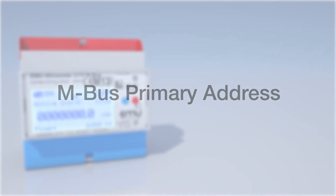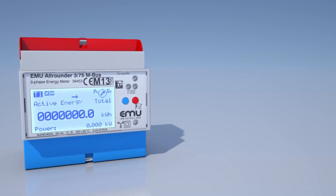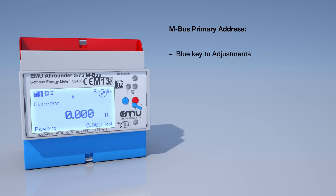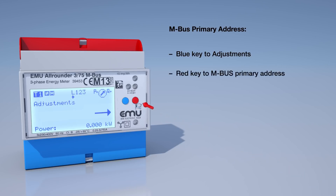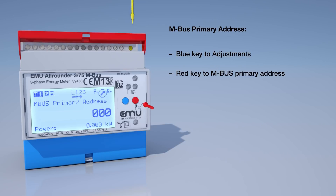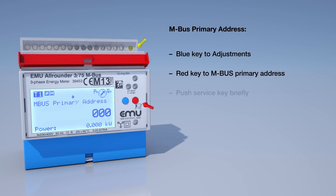MBUS Primary Address. To configure the MBUS Primary Address, press the blue button several times until you see the adjustments menu. Now press the red button several times until you see the MBUS Primary Address menu. Now briefly press the service button.